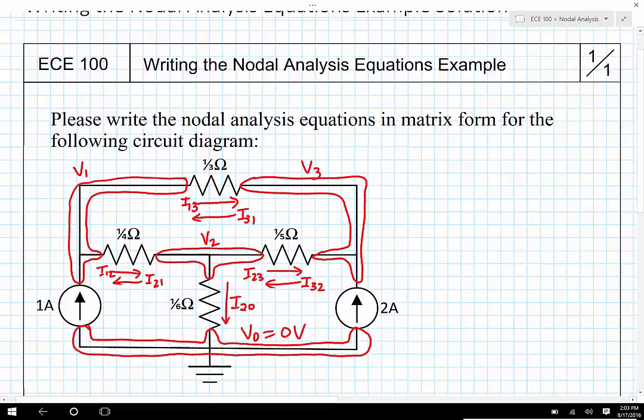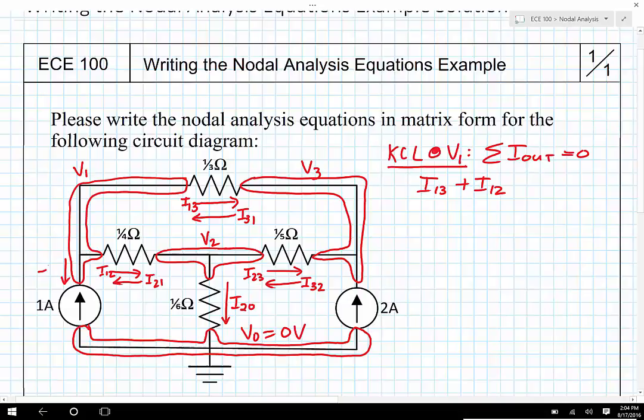So let's do Kirchhoff's Current Law at V1, at node 1. So Kirchhoff's Current Law, we're going to see, we wanted the sum of the currents leaving the node is equal to 0. When we're doing Kirchhoff's Current Law, always do the sum of the currents leaving the node. Well, I can see that i1,3 is leaving the node. I can see that i1,2 is leaving the node, and there is a 1 amp current entering the node, but we could also think of that as a negative 1 amp current leaving the node. So I'm going to have minus 1 amp is equal to 0. Let's go ahead and I'll modify that. I'll go ahead and follow this one all the way through.